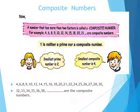So, the smallest prime number is 2 and the smallest composite number is 4. Because 1 is neither prime nor composite, and 2 and 3 are prime numbers, the next number is 4. Therefore 4 is the smallest composite number.